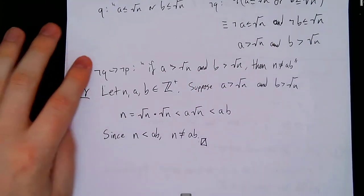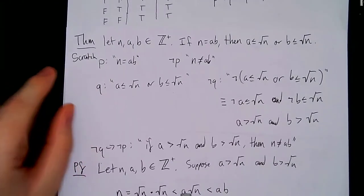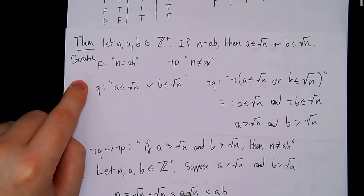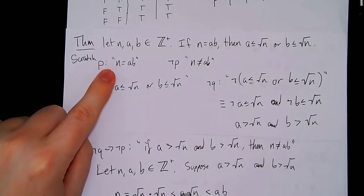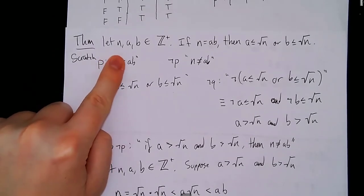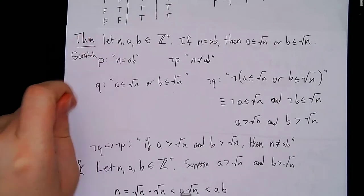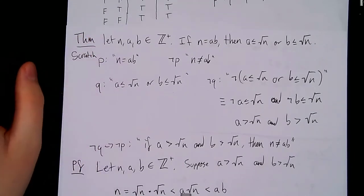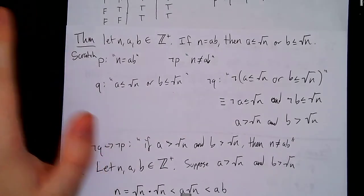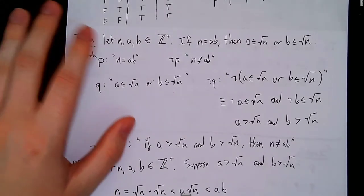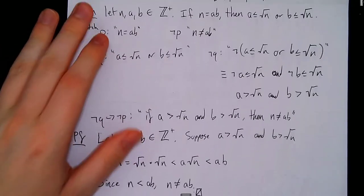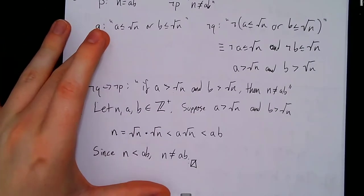If you try to work this out doing a direct proof, it's certainly going to be a lot harder, if not impossible, because we can't talk about the square root of n just given that we don't know for a fact that the square root of n will be an integer or not. Because there's all that uncertainty — this could work for any n, even if n isn't a perfect square — we need to actually take the proof by contraposition.